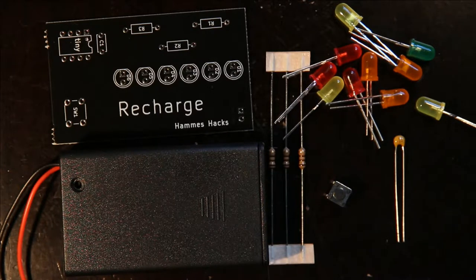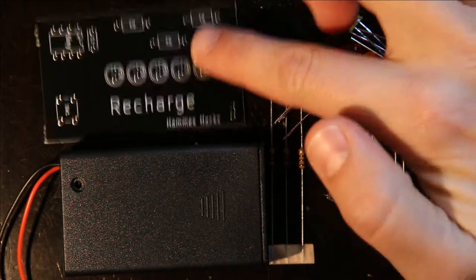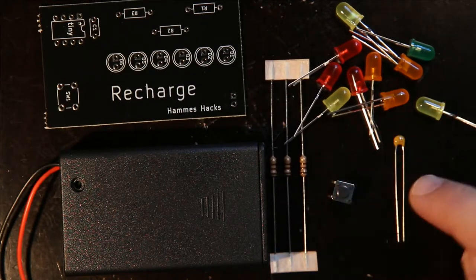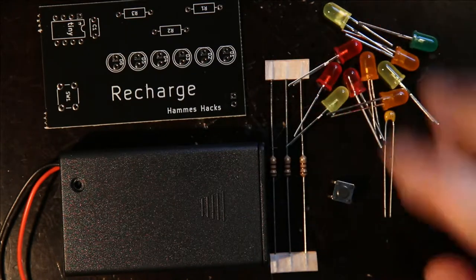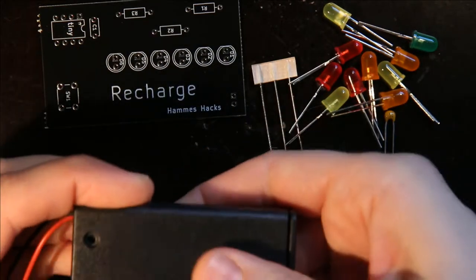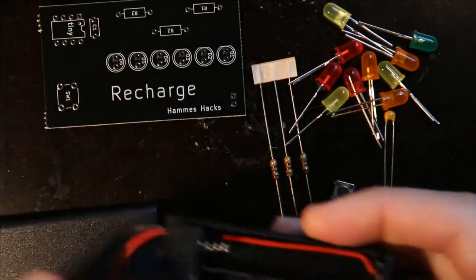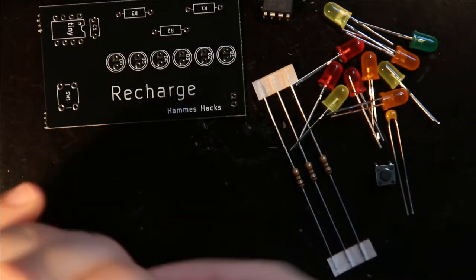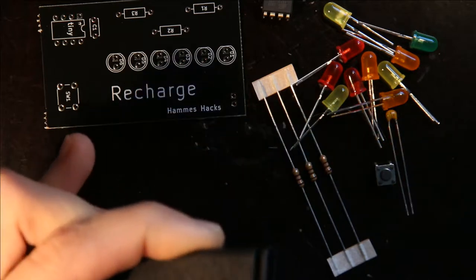Tonight I'm going to be assembling the recharge kit, which is this PCB, these three resistors, a button, a capacitor, some colored LEDs, a battery holder, and inside the battery holder is a microcontroller. I put it inside the battery holder so that it would be protected in shipping.